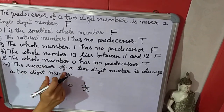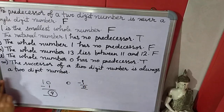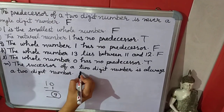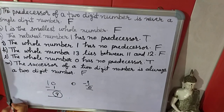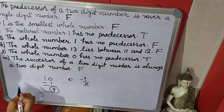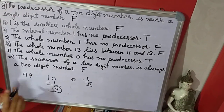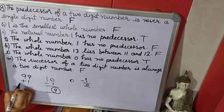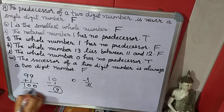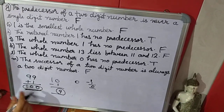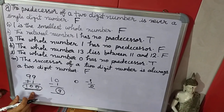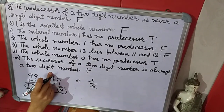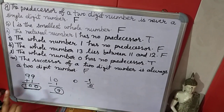Next: the successor of a 2-digit number is always a 2-digit number. This is false. For example, take 99 — it is a 2-digit number. Its successor is 99 plus 1, which equals 100, a 3-digit number. So the successor can be a 3-digit number. The statement says always 2-digit — that is false.